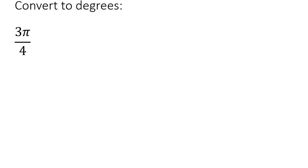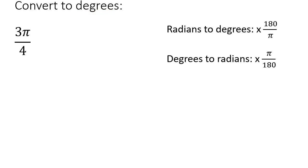So if you want to go from radians to degrees, then you just multiply by 180 over pi. If you want to go from degrees to radians, you just multiply by pi over 180. So we want to go from radians to degrees, so we're just going to multiply this by 180 over pi. Now check this out. Because we're multiplying, you can cross-cancel. So you could cancel that, and you could cancel that. And then you're left with 3 multiplied by 180 over 4.